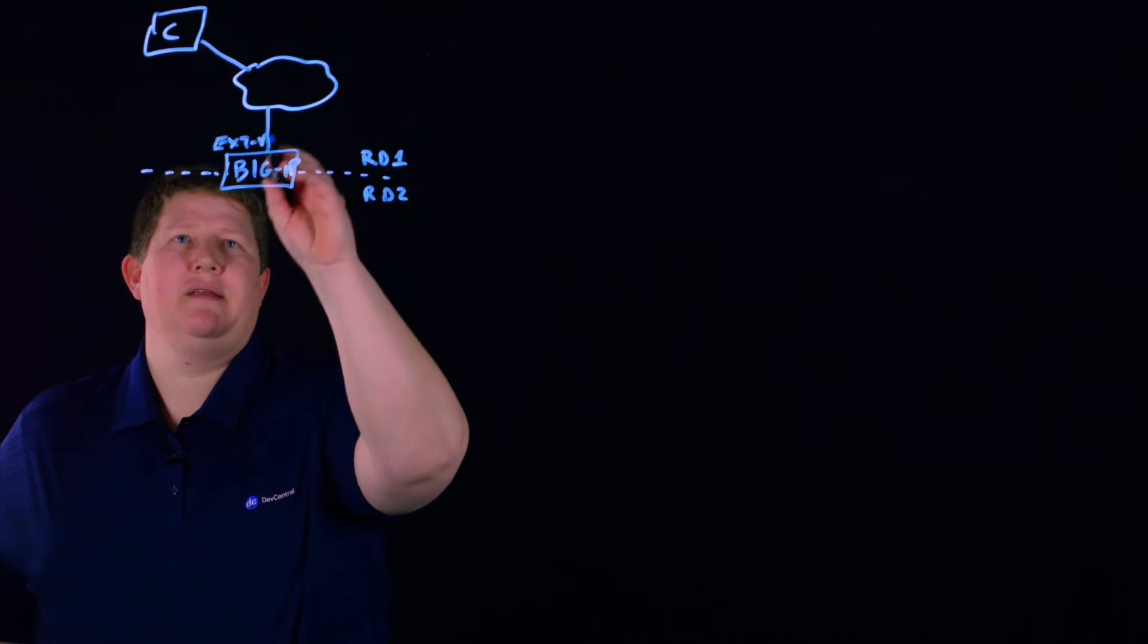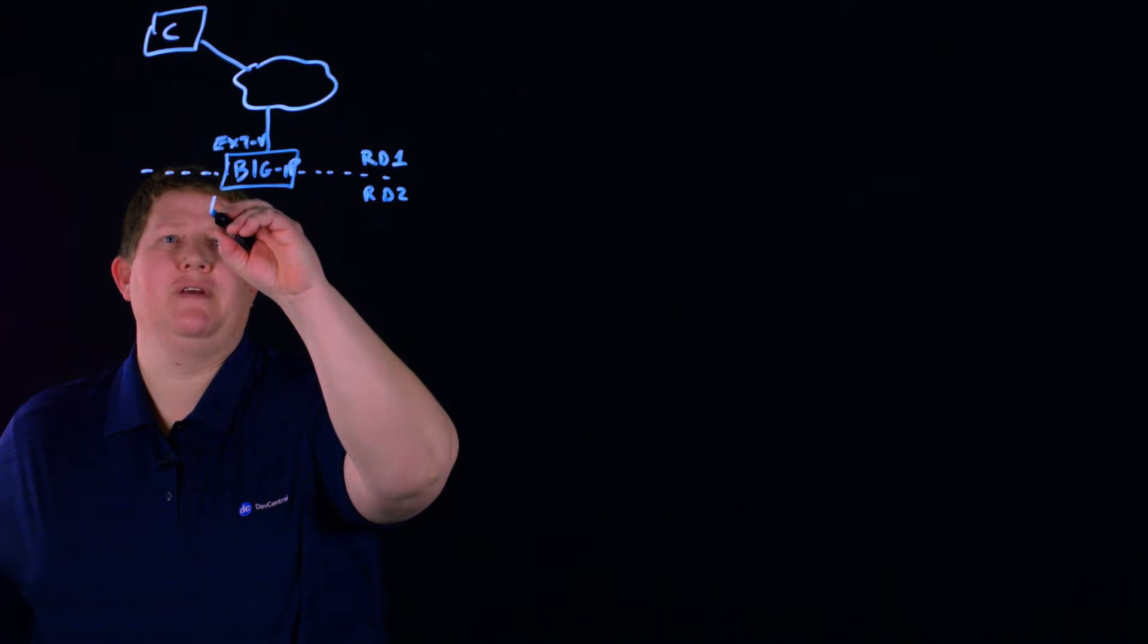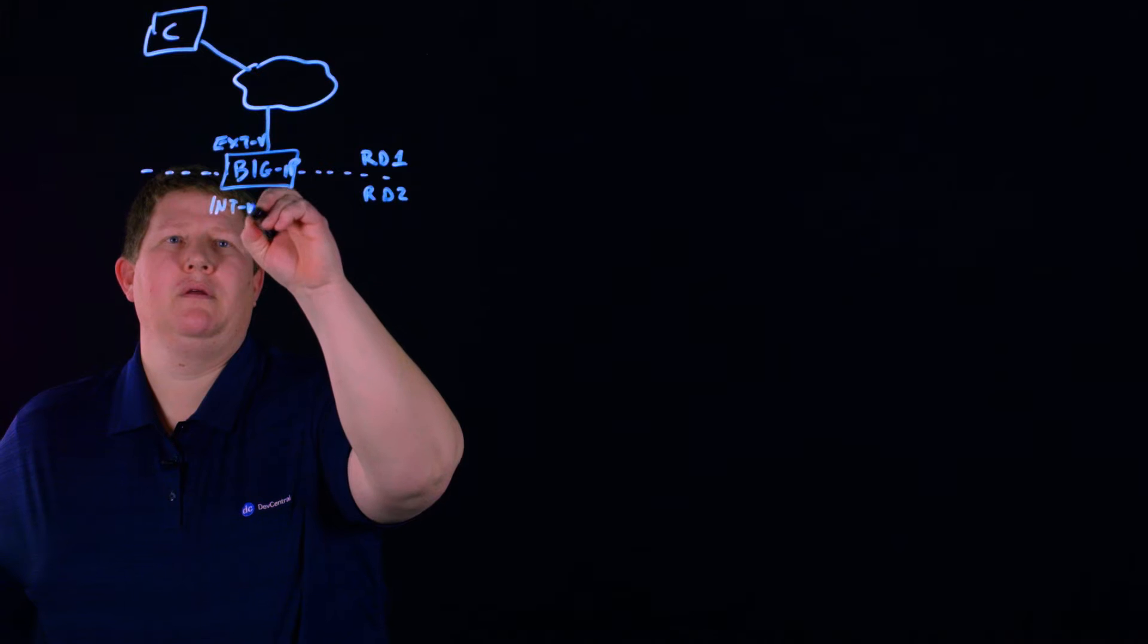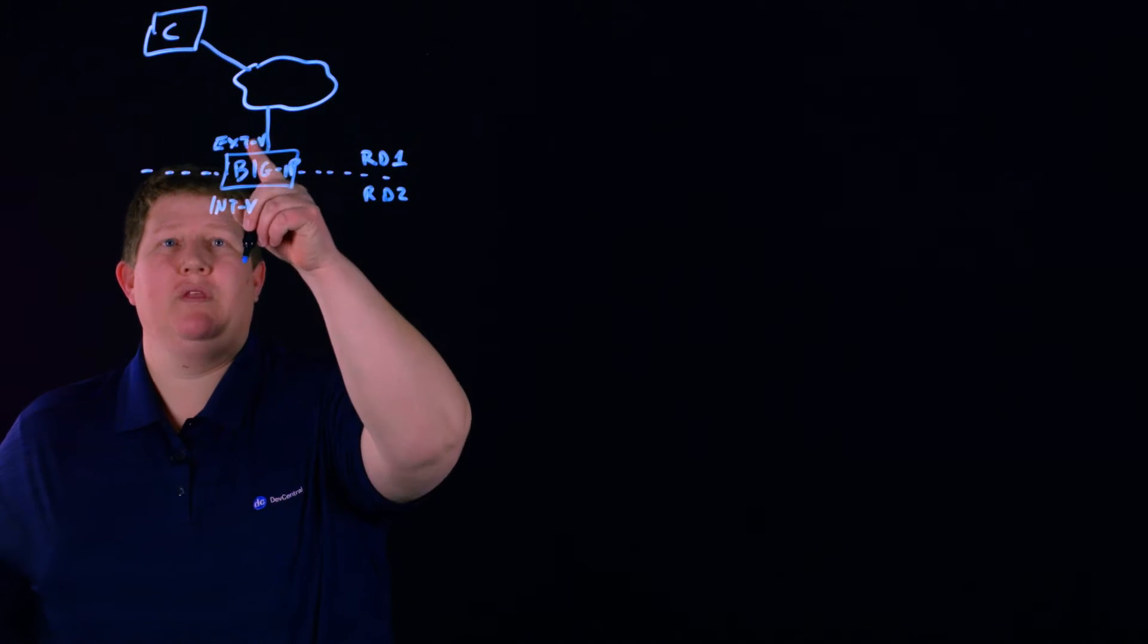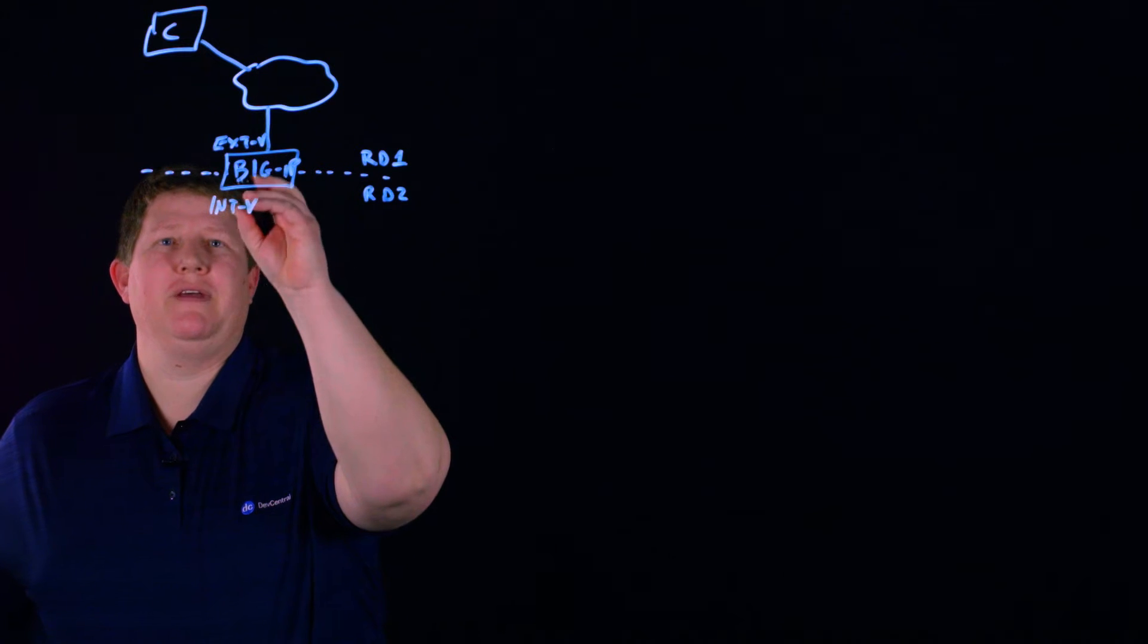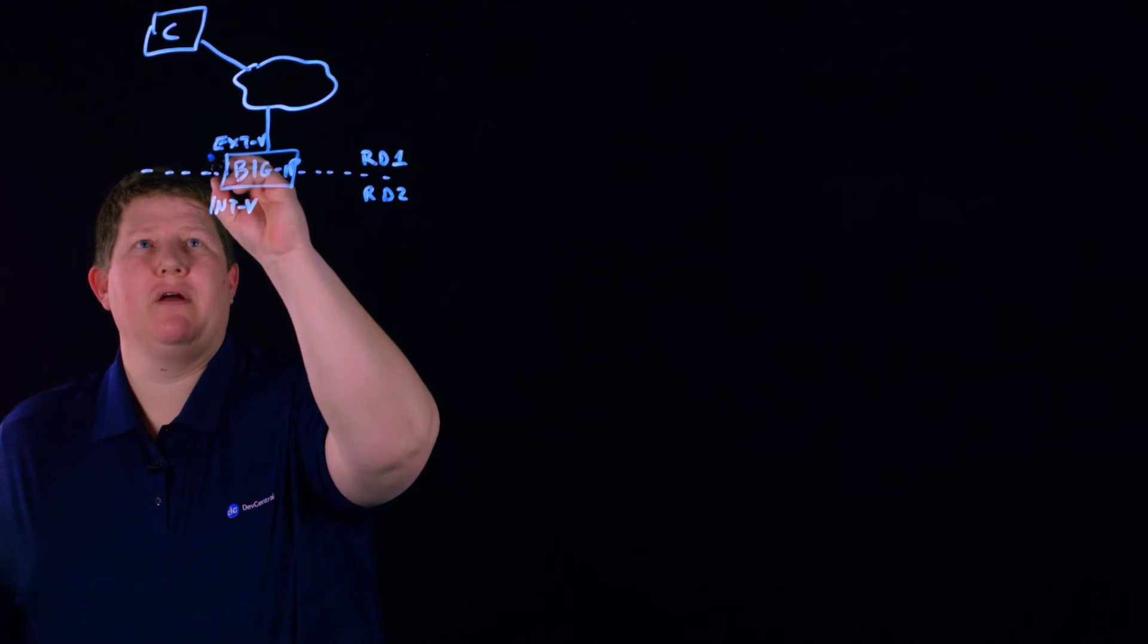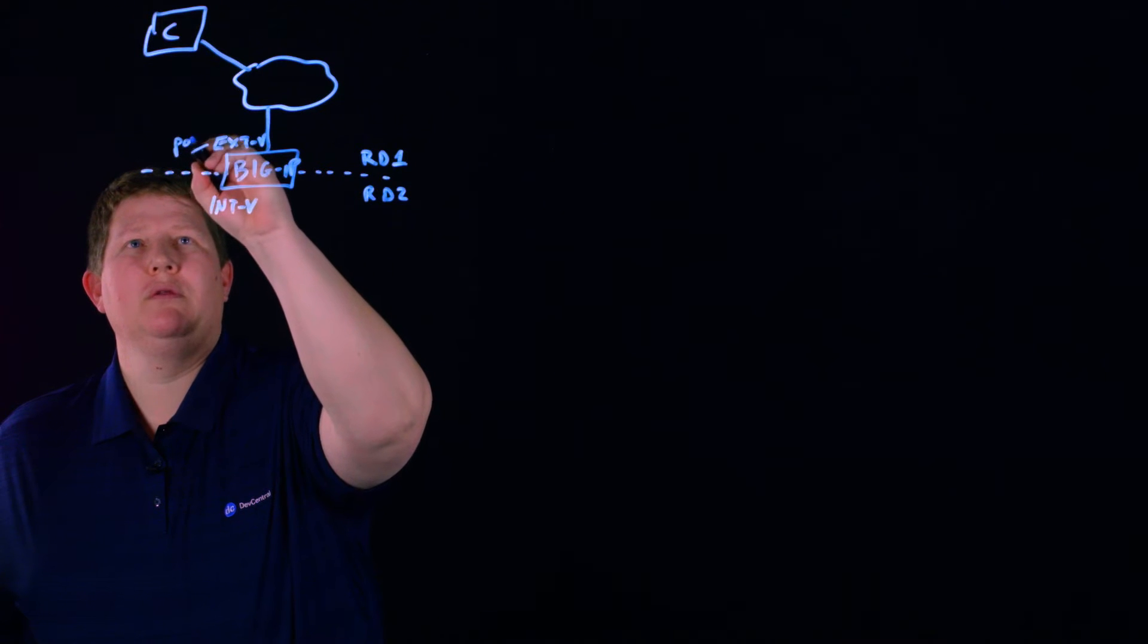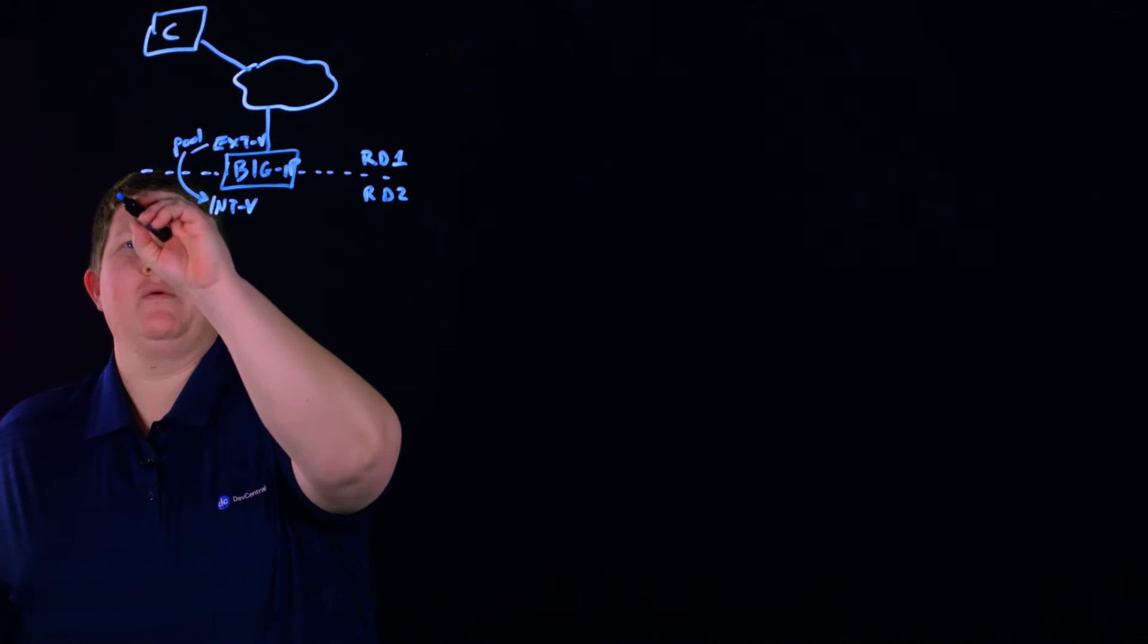We'll hit that external VIP and then we have an internal VIP on route domain 2. The pool for that external VIP—let me draw this—the pool is actually that internal VIP.